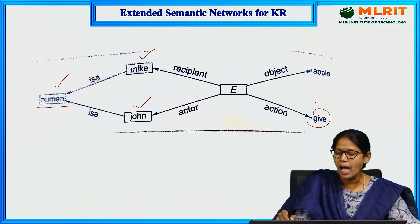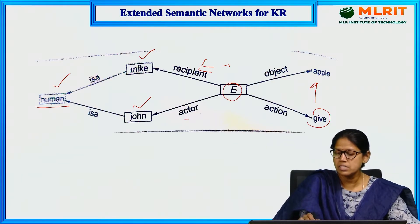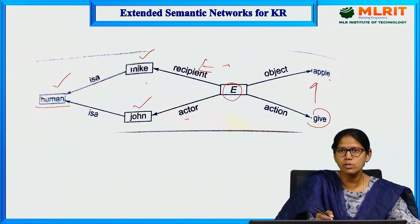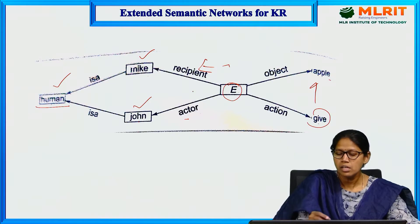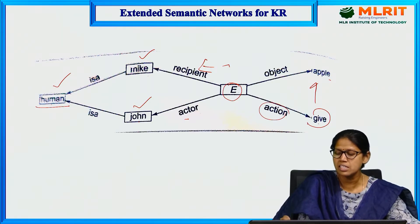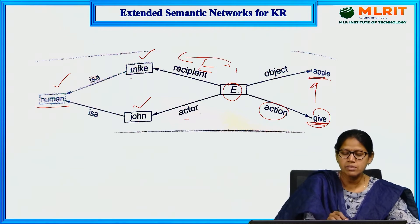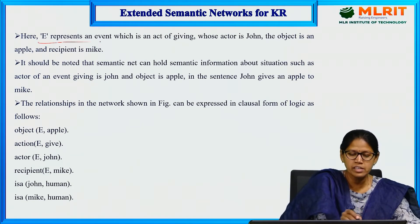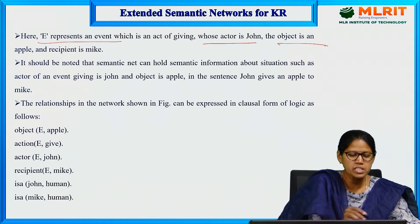The action is John giving an apple to Mike. Here John is the actor — he is an event represented with an action and object. The object is the apple and John is the actor. Human is the main base node, Mike and John are subclasses of human via ISA relationship. John is the actor who is giving the apple to Mike — that is the meaning of the English sentence.